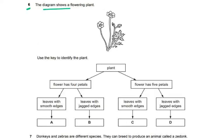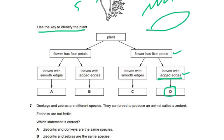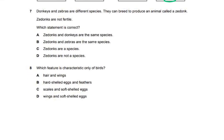Question six: the diagram shows a flowering plant — use the key to identify it. Counting the petals: one, two, three, four, five — so five petals. Then checking the leaf edges: the leaves have jagged edges, not smooth edges. So the answer is D. If you didn't know the word 'jagged' you need to improve your English skills.